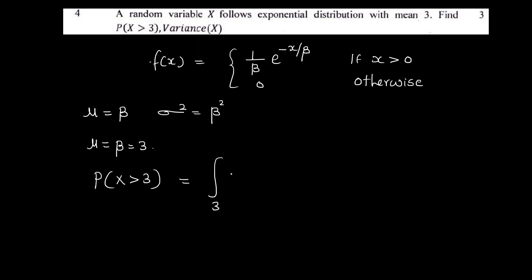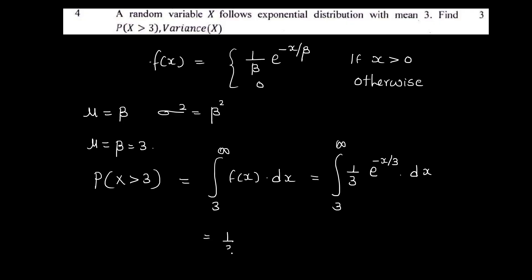The probability of x greater than 3 equals the integral from 3 to infinity of f of x dx. With beta equal to 3, this is the integral from 3 to infinity of 1 by 3 times e raised to minus x by 3 dx. This equals 1 by 3 times e raised to minus x by 3, divided by minus 1 by 3, evaluated from 3 to infinity.